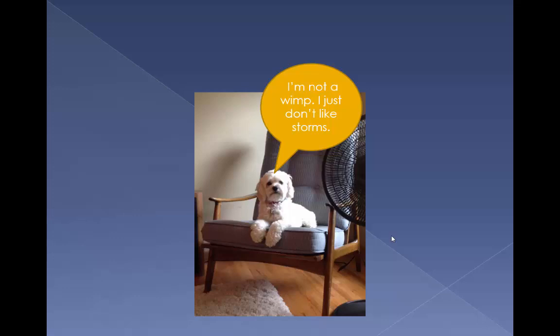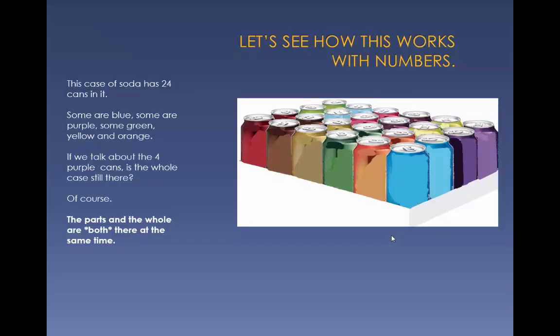I'm not a wimp. I just don't like storms. Let's see how this works with numbers. This case of soda has 24 cans in it. Some are blue, some purple, green, yellow, orange. If we talk about the four purple cans, is the whole case still there?